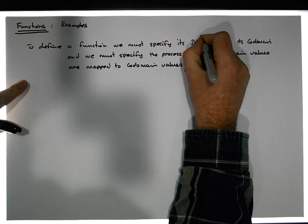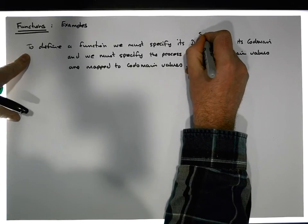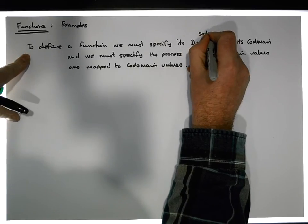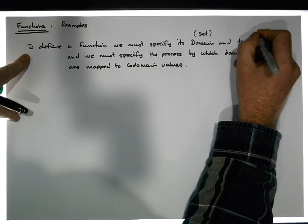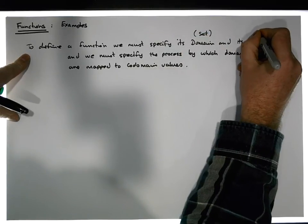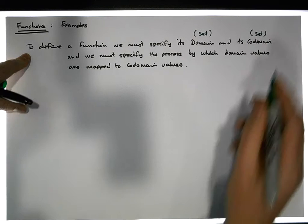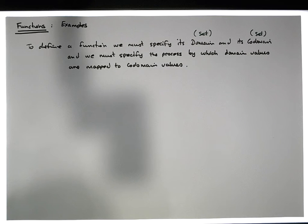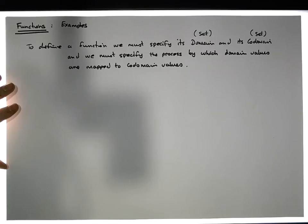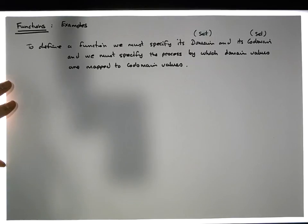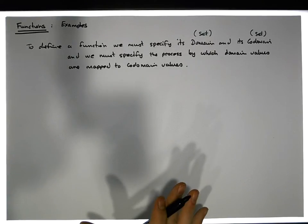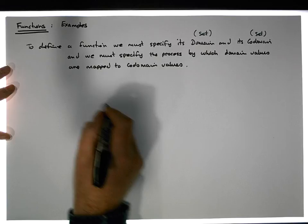So let's just keep that in mind: the domain is a set and the codomain is also a set. Now let's try to check whether some mappings we're going to define are functions or not. They will be relations, but we want to find out whether they're functions.